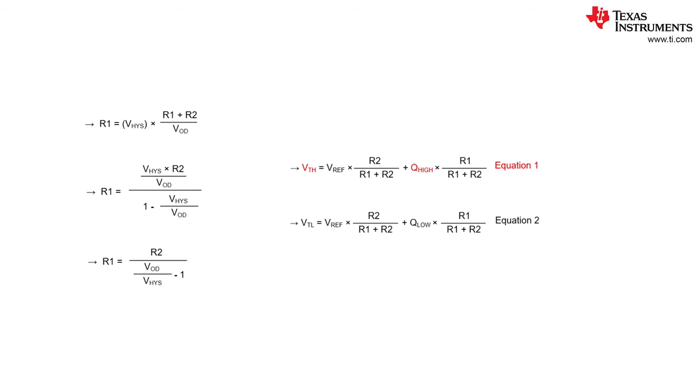After manipulating equation three, we now have an equation for R1 as it relates to R2, the output differential voltage, and the hysteresis window voltage. Using this new equation for R1, we can plug in an assumed resistance value for R2, our output differential voltage, and our desired hysteresis window voltage to solve for R1.